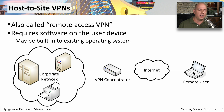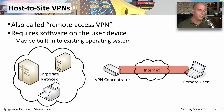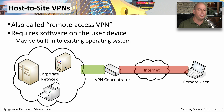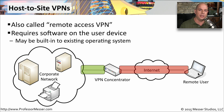By installing some software, or using software built into our operating system, we can communicate directly back to a VPN concentrator over an encrypted tunnel. Everything on the inside of that VPN concentrator is in the clear, or decrypted traffic, into the corporate network. If any corporate information goes through the concentrator back to us, the concentrator will encrypt it, send it through the internet connection, and on our single device we will decrypt that data — ensuring that even on an open hotel network, all traffic going back to our corporate environment is encrypted and secure.